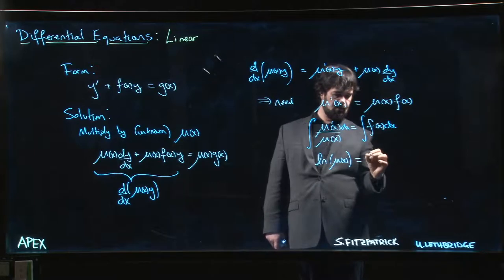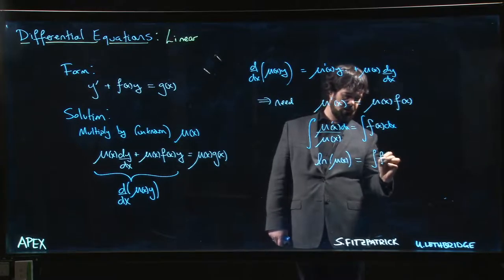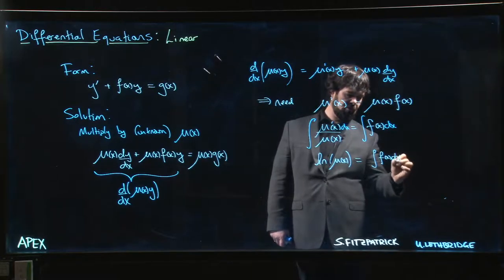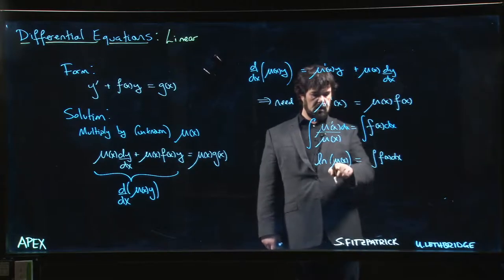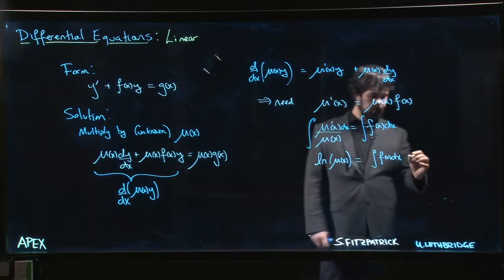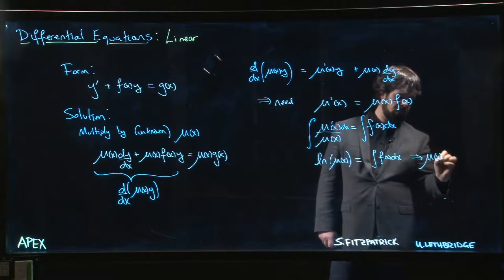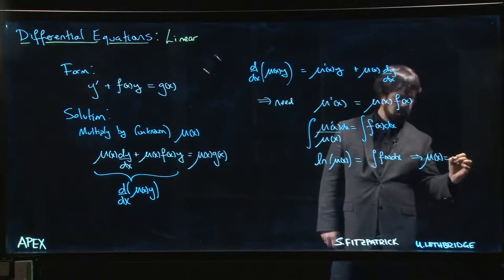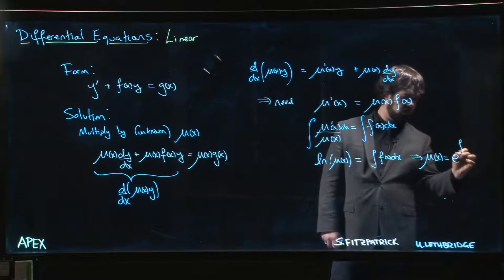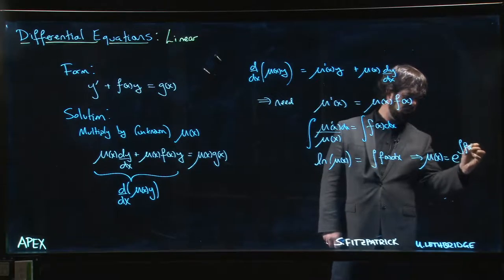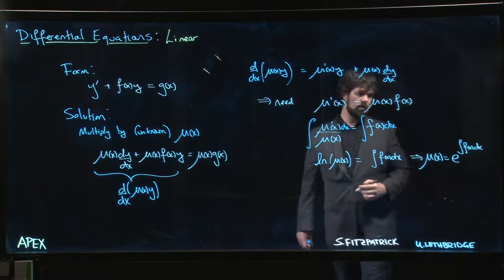And on this side we just have, well I don't know, because we don't know what that function is, so we just leave it as that anti-derivative. We want to solve for this mu. So mu of x should be e to the integral of f(x) dx.